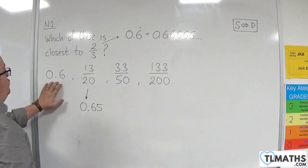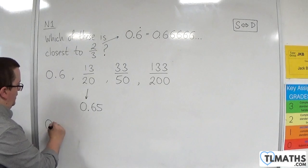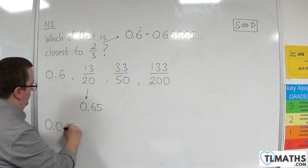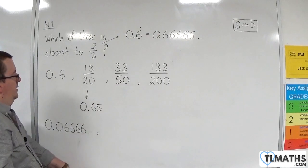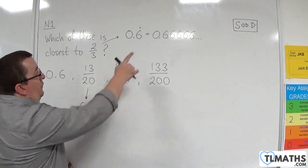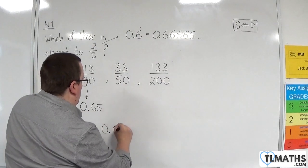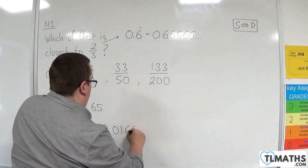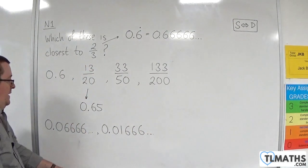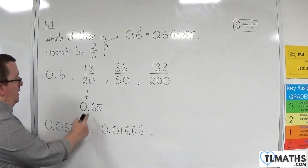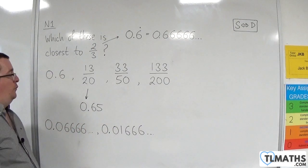Okay, so if you subtract 0.6 from that, you would get 0.06666, etc. If you subtract 0.65 from that, you would get 0.016666, etc. And clearly, because that number is less than that one, 0.65 has to be closer to 0.6 recurring.